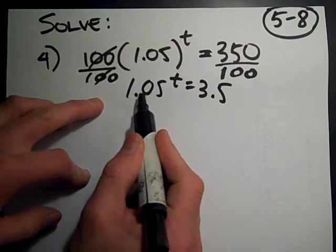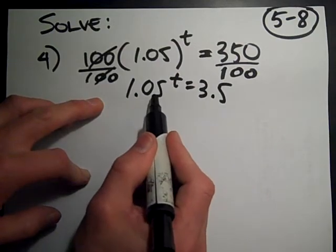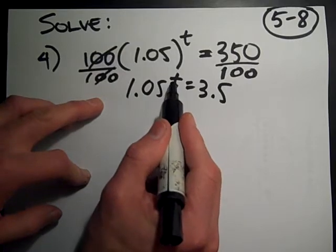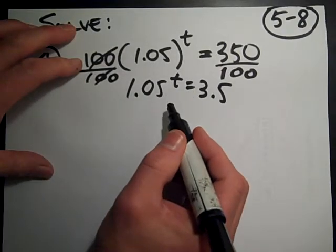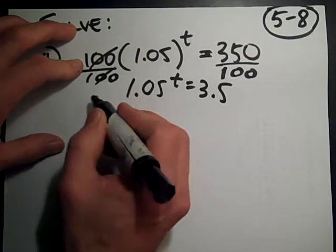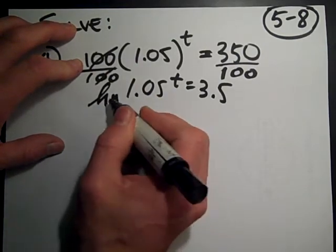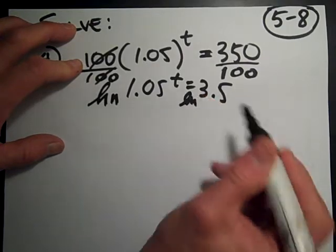Okay, now resist the temptation to divide both sides by 1.05. This is not times t, that's an exponent. The only way we can get at that exponent is if we take the log of both sides. It does not matter if you take the common log, base 10, or the natural log. So I'm just going to take the natural log because I can kind of sneak an ln in right there.